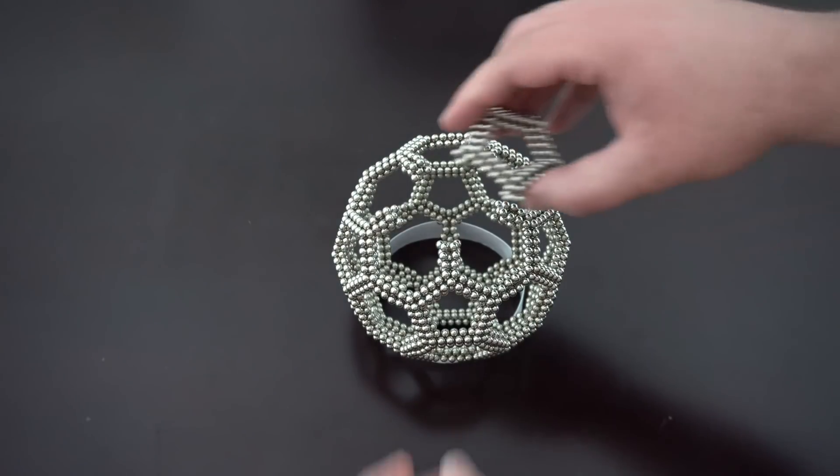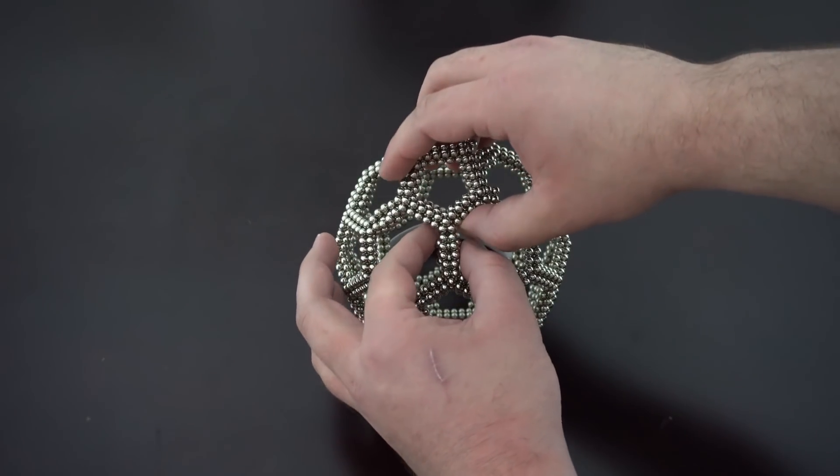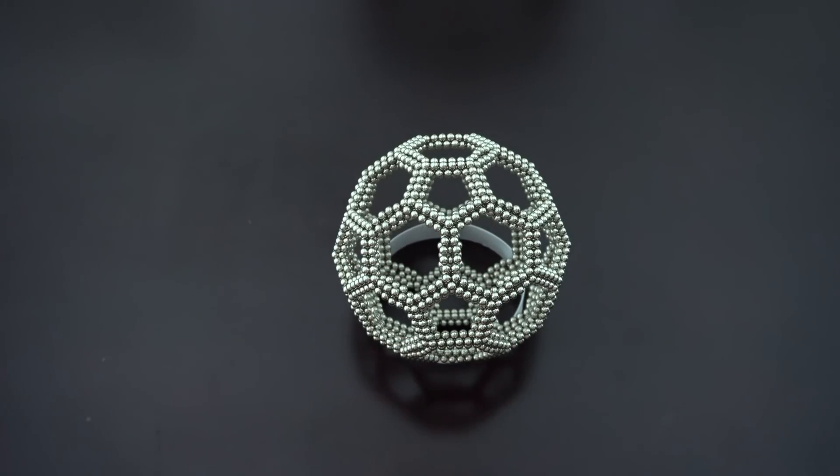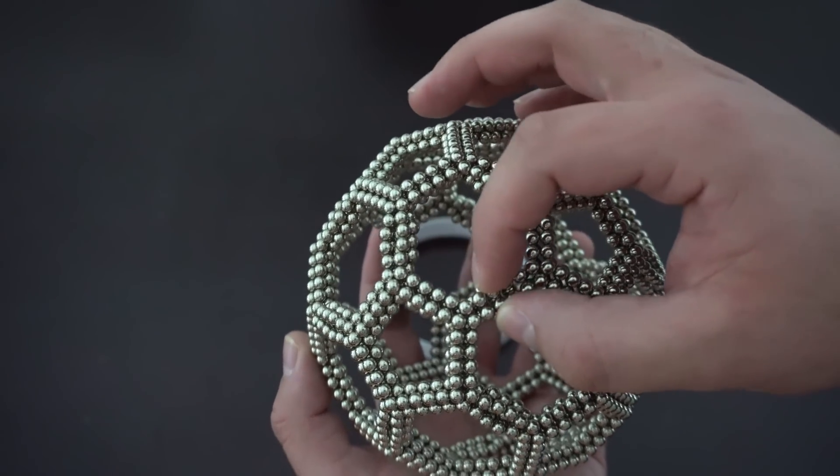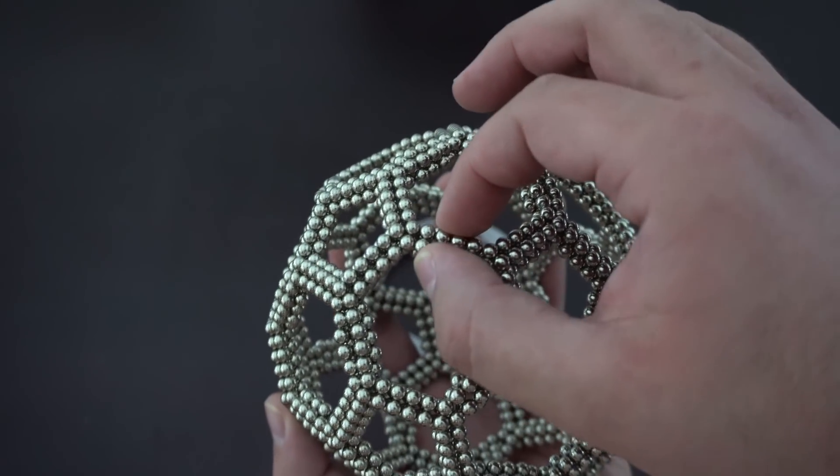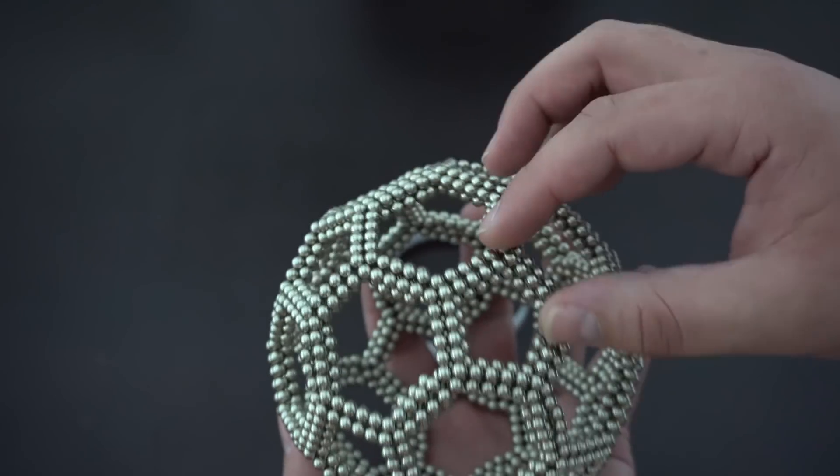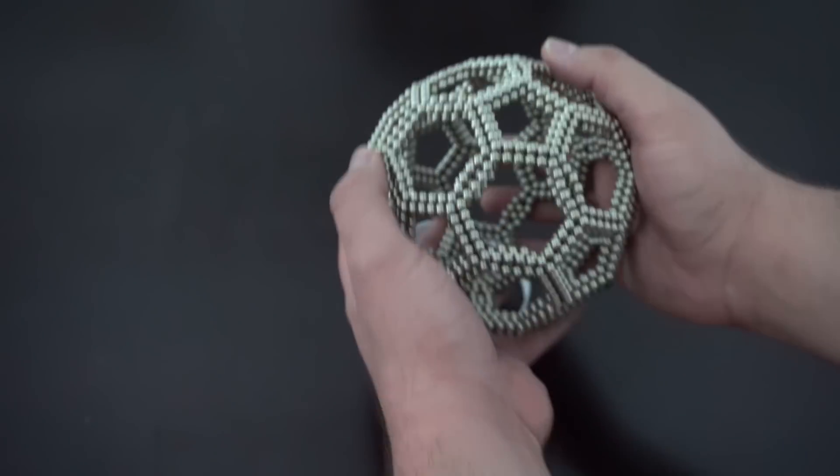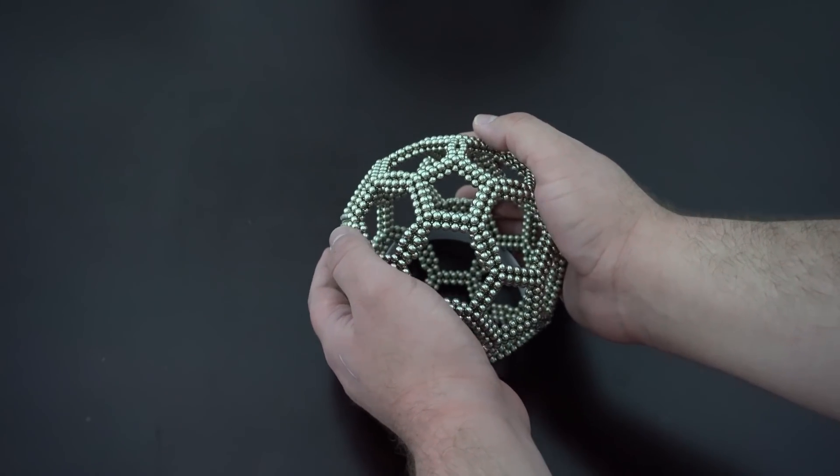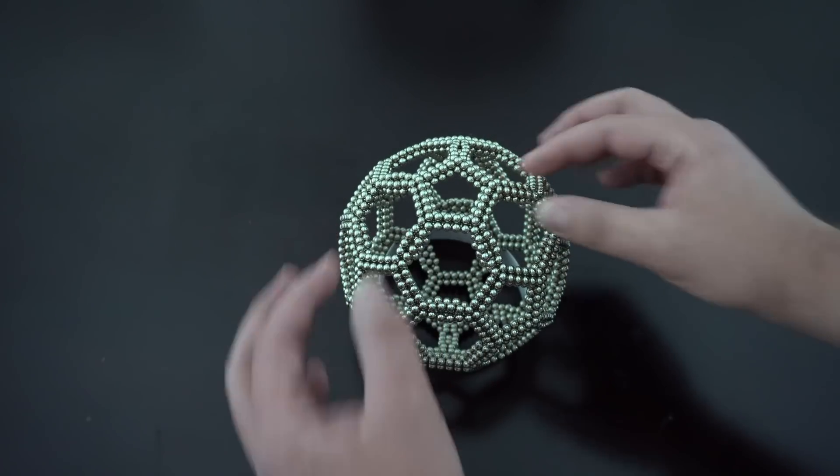And there you go, you've built a truncated icosahedron. You may need to fix a couple of these edges. They are a little sensitive and they like to bow outwards like that, but once you have it situated on a stand or wherever you're going to keep it, you can just fix all of the visible ones.